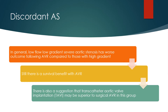In general, low flow low gradient severe aortic stenosis has worse outcomes following aortic valve replacement compared to those with high gradient. Still, there is a survival benefit with AVR. There is also a suggestion that transcatheter aortic valve implantation may be superior to surgical AVR in this group.